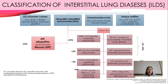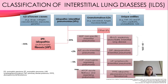At that slide you will see the classification of interstitial lung diseases. We have four main groups: interstitial lung disease of known causes, idiopathic interstitial pneumonias, granulomatous interstitial diseases, and other unique diseases. The main group is idiopathic interstitial pneumonias.